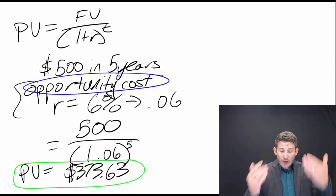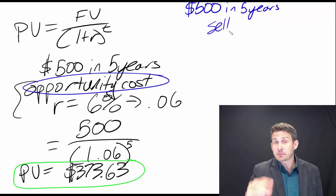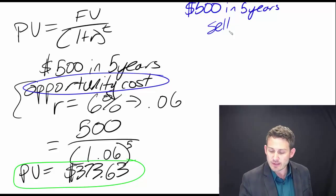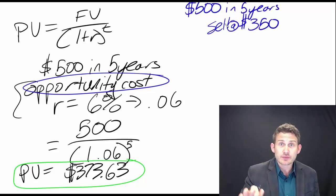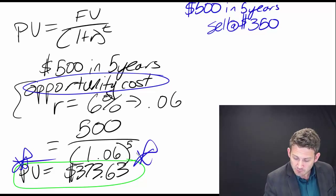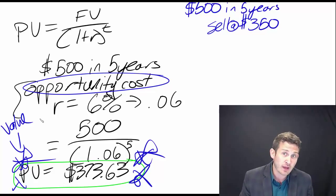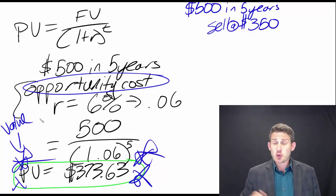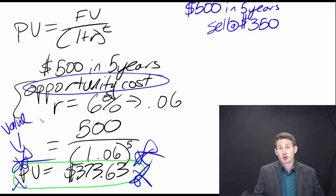We came up with a value of $373.63. Now if I said I will sell this payment to you - I'll give you $500 in five years if you pay me $350 right now - should you do this? Yes, because it has a value of $373.63, and I'm offering to sell it to you for $350. You could buy it for less than its value, which will basically make you $23 right off the bat.